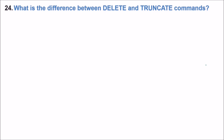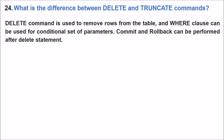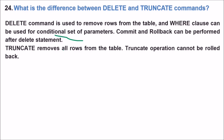What is the difference between DELETE and TRUNCATE? The DELETE command is used to remove specific rows from a table; a WHERE clause can be used for conditional deletion, and COMMIT and ROLLBACK can be performed after DELETE. TRUNCATE removes all rows from the table, and a TRUNCATE operation cannot be rolled back.